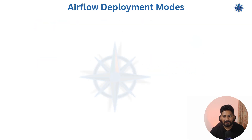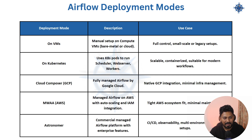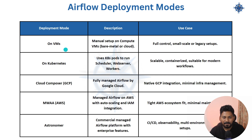Let's get started with Airflow deployment modes. I've put this in a tabular format for better understanding — pictorial or tabular formats help summarize information easily. On the left-hand side you can see the deployment modes: single VM, Kubernetes, managed Airflow like Google Cloud Composer, MWAA from AWS, and the Astronomer platform.